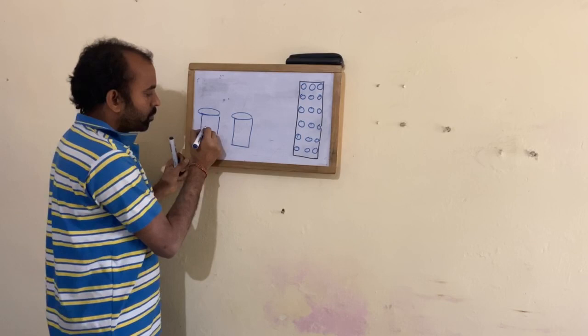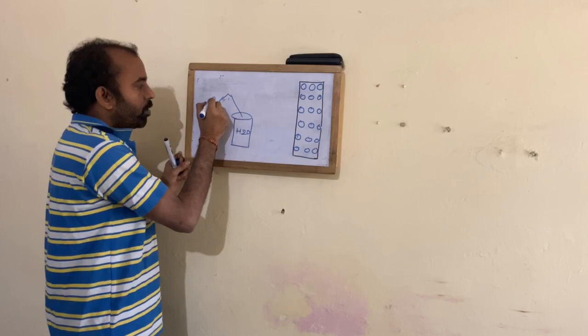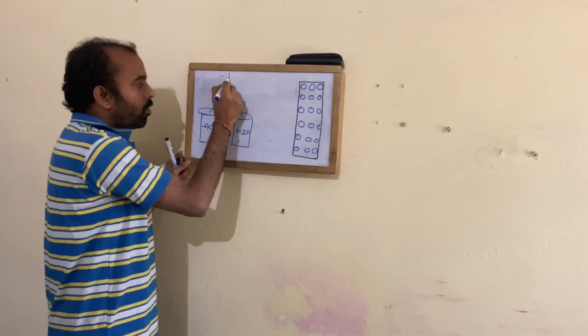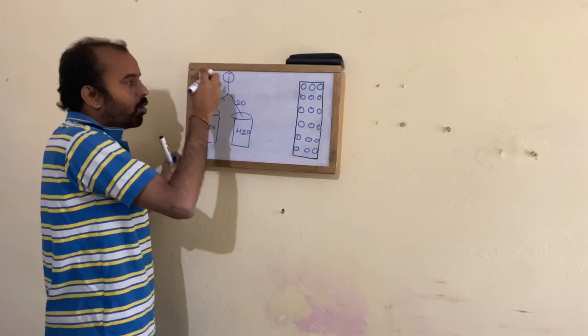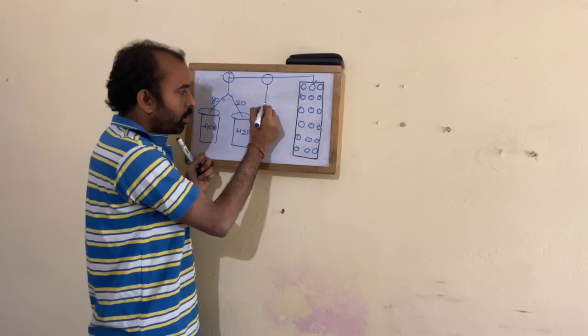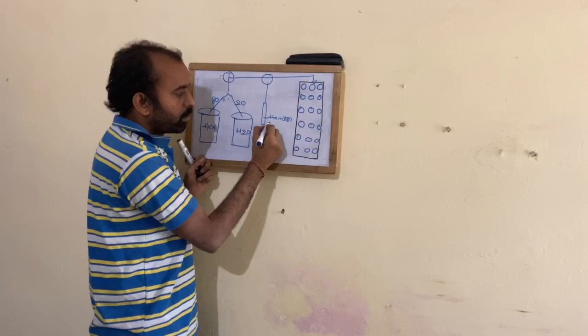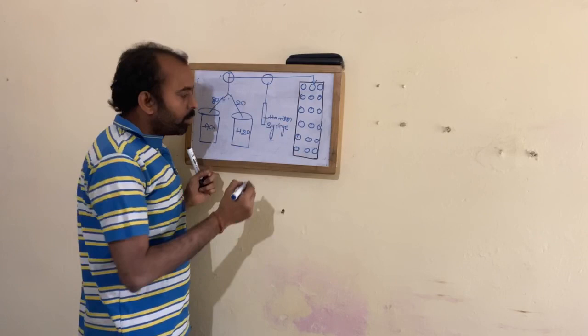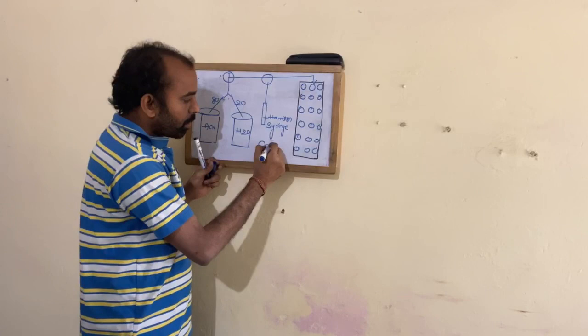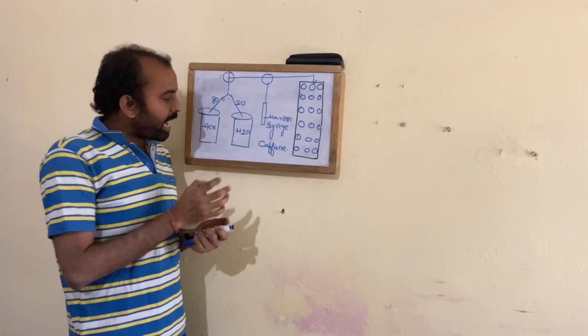For the mobile phase, I take acetonitrile and water in a ratio of 80:20. This pump will suck the mobile phase and pass it onto the column. This is the injection port where I am injecting my compound using a Hamilton syringe. Now what happens in chromatography is about the rate at which the compound is present in the mobile phase versus the stationary phase.